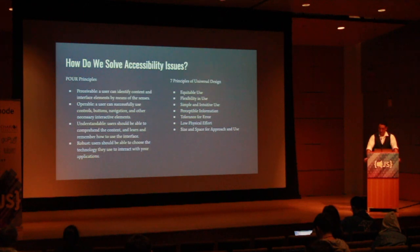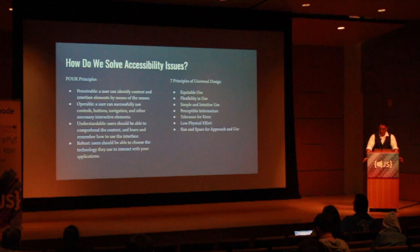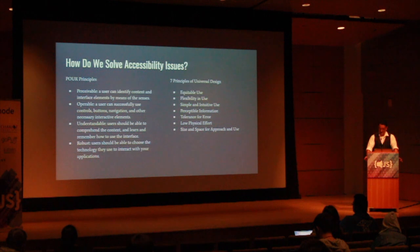The principles of universal design go beyond software development and are considerations to be made in any form of design and engineering. Everything that you design must provide for equitable use, flexibility in use, simple and intuitive use, perceptible information, tolerance for error, low physical effort, and the size and space for approach and use. In software development, some of these principles can in some cases be reduced to simple values or checks that can be done automatically, programmatically, with a computer.